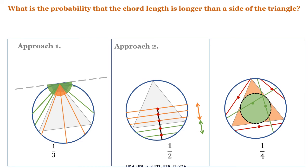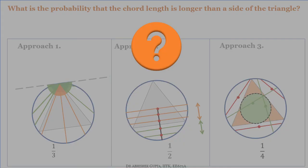We were expecting 1/3 or 1/2, but instead Approach 3 gives 1/4. Now we have three different answers — 1/3, 1/2, and 1/4 — each appearing correct. The question remains: which one is actually right? It turns out we cannot tell which one is correct from intuition alone. We require a solid mathematical foundation to define what 'randomly choosing a chord' means precisely, and only then will we be able to determine which answer is correct.